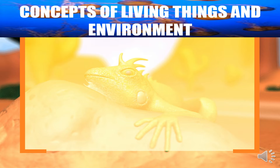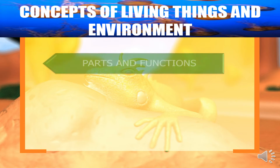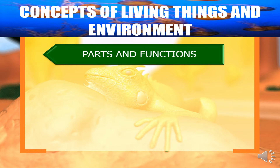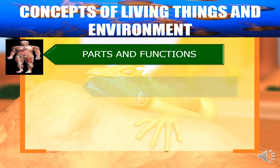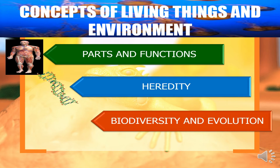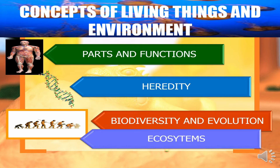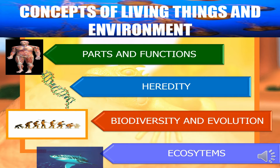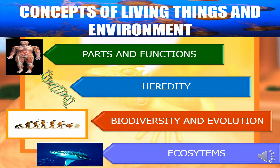This time, let us explore the concepts that comprise living things and environment. For this quarter, there are four major chapters. The first one is on parts and function, the second one deals with heredity, the third one deals with biodiversity and evolution, and lastly, deals with ecosystem.